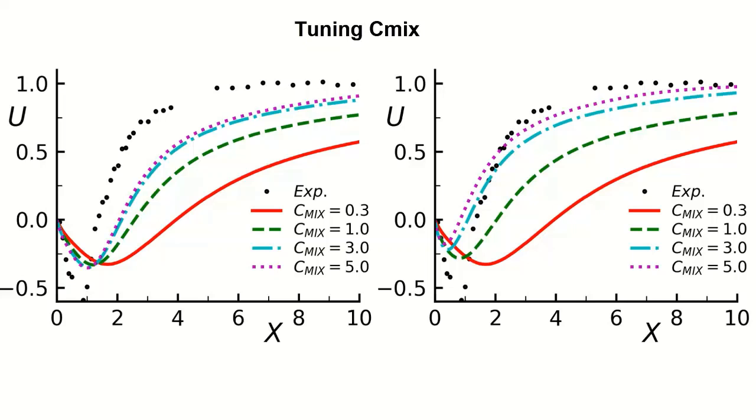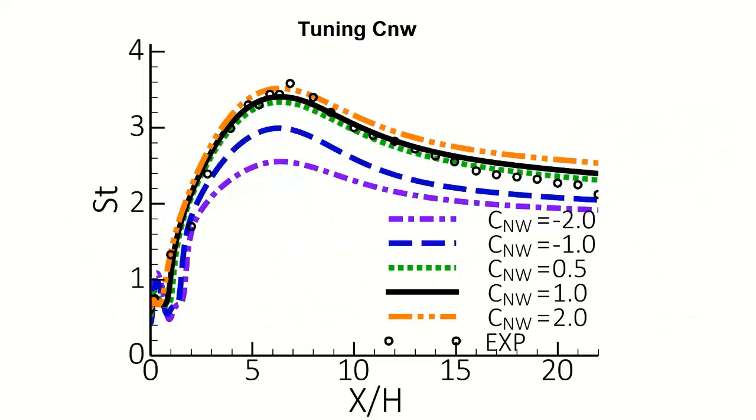Although less relevant in most cases compared to CSEP and CMix, C and W can be tuned to modify the model characteristics in near-wall regions under non-equilibrium conditions.